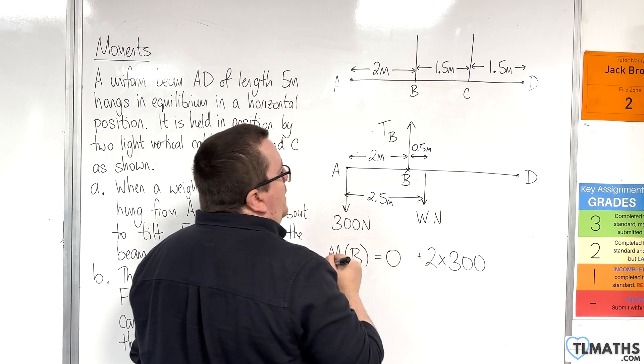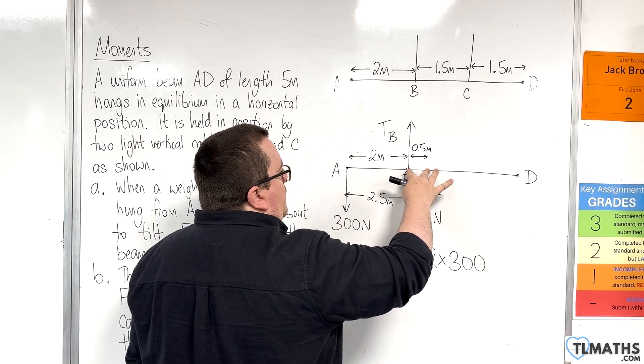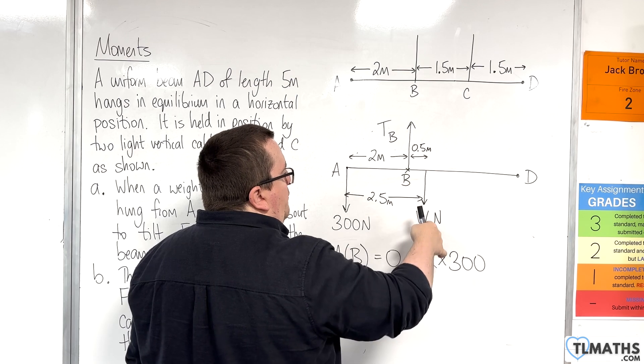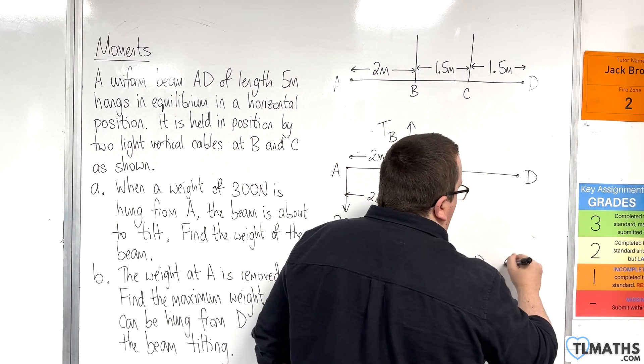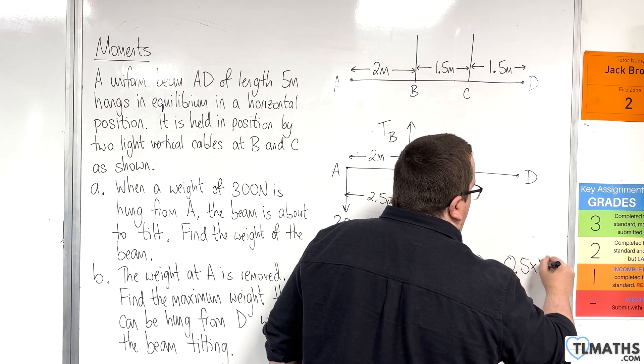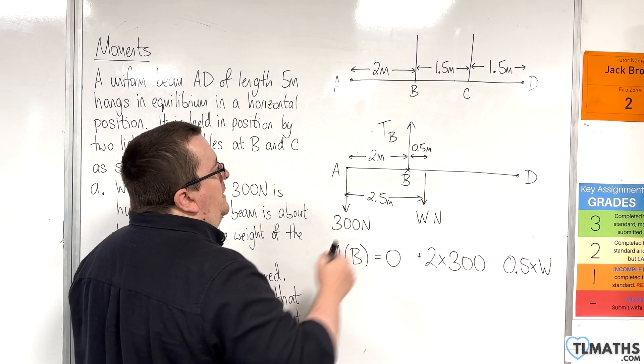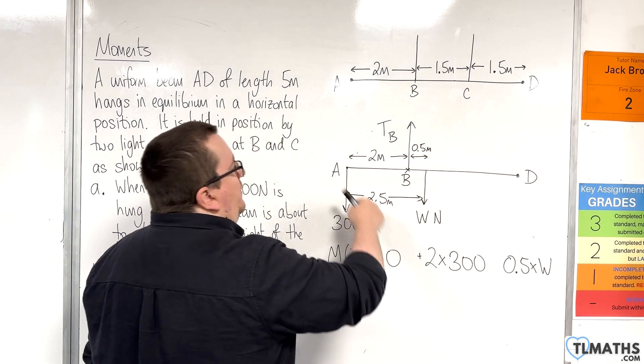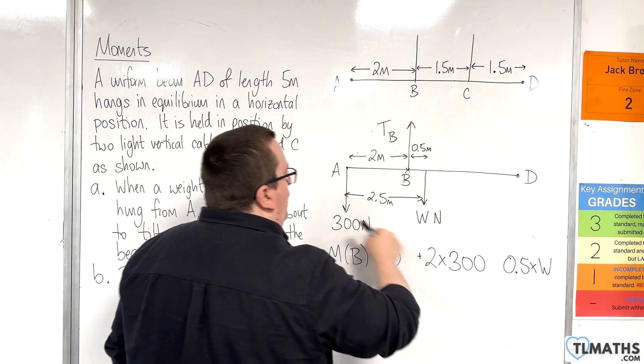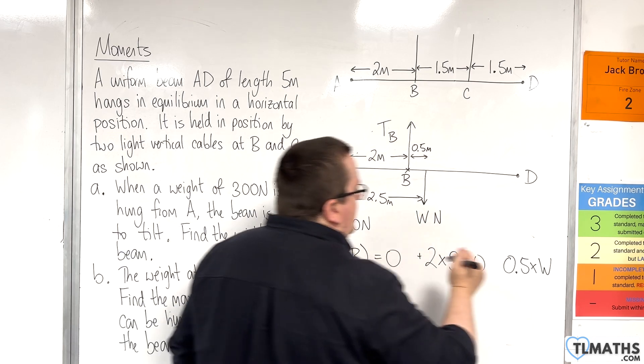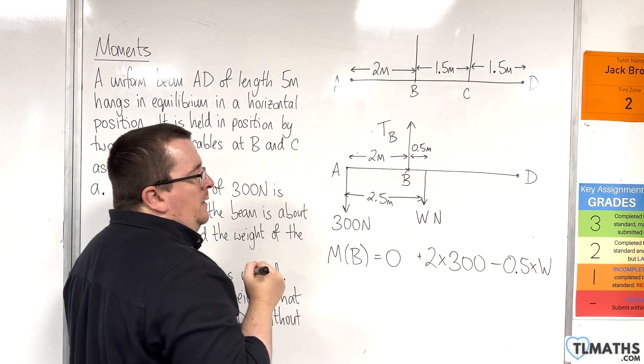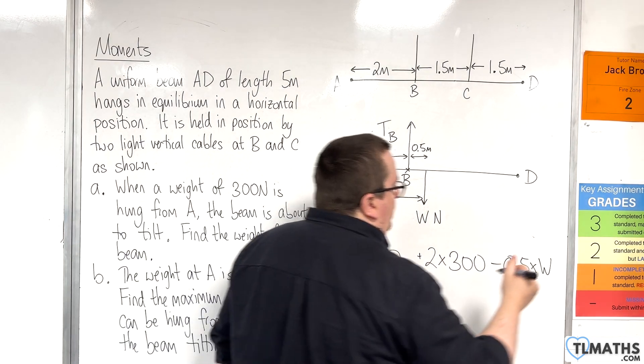And then for this one, so we can put a little positive sign there if you like. And then for this one, we are half a metre away from the W newton force. So, 0.5 times W. And that is going to be creating a turning effect that is going clockwise. And so that's negative.